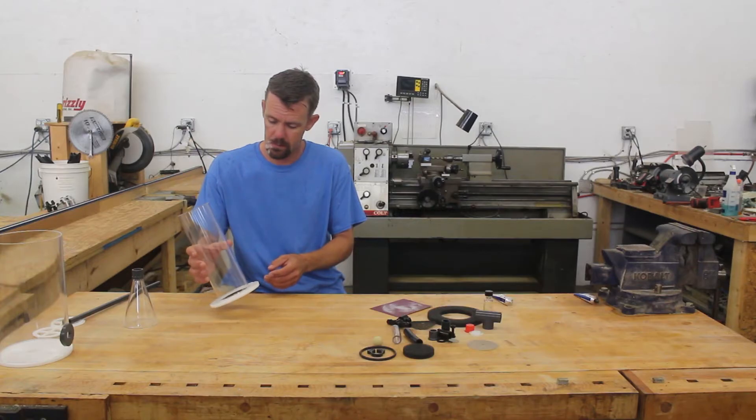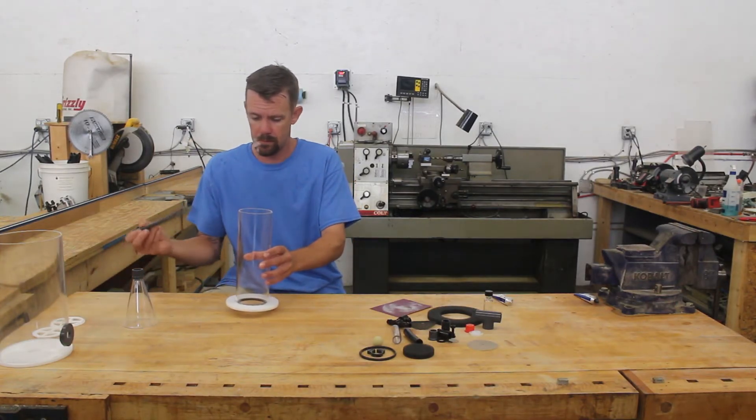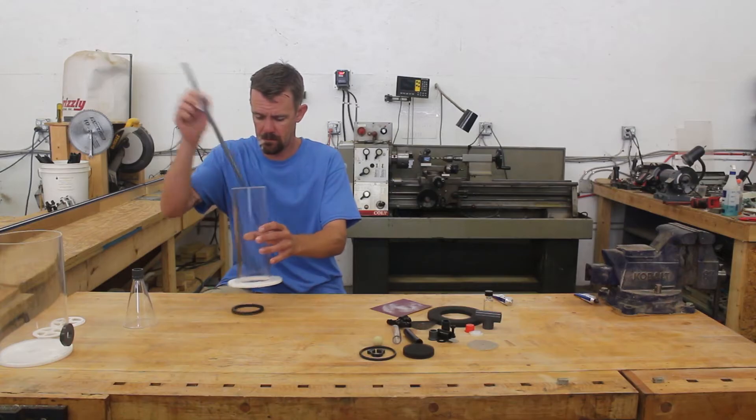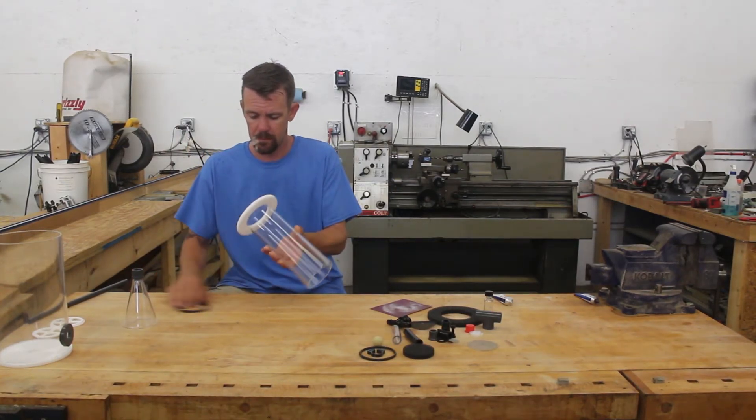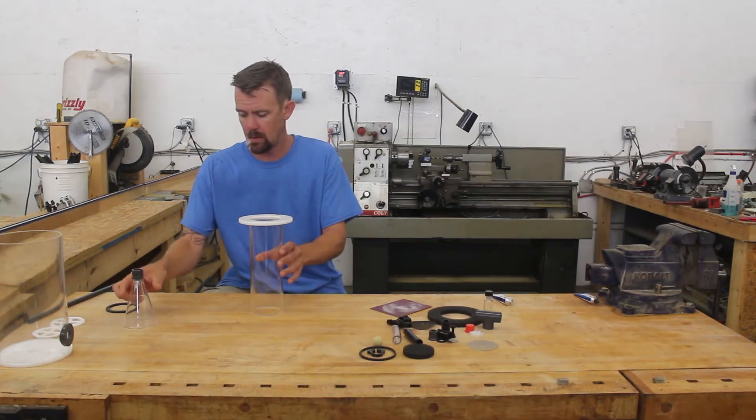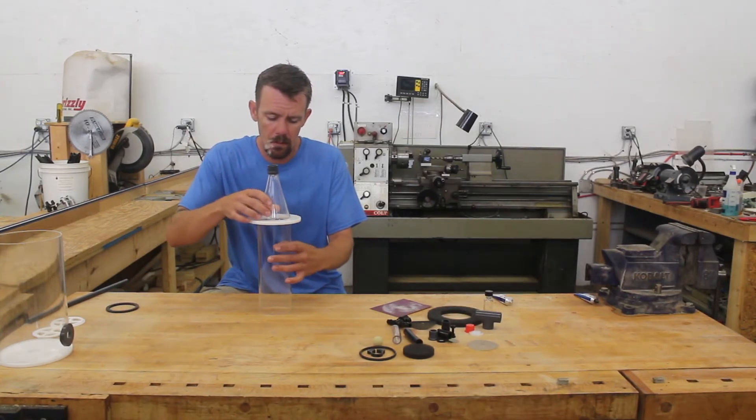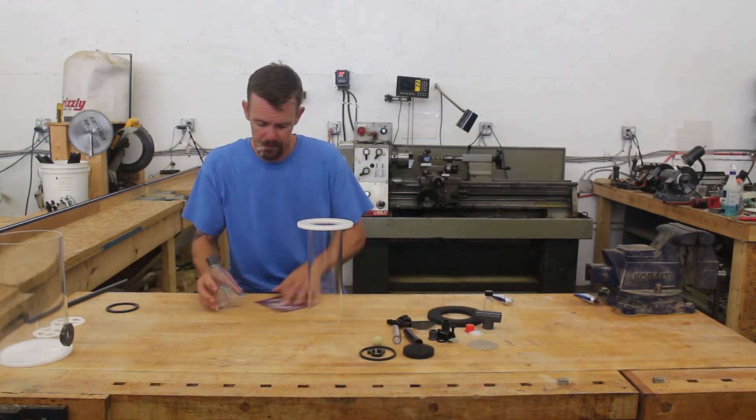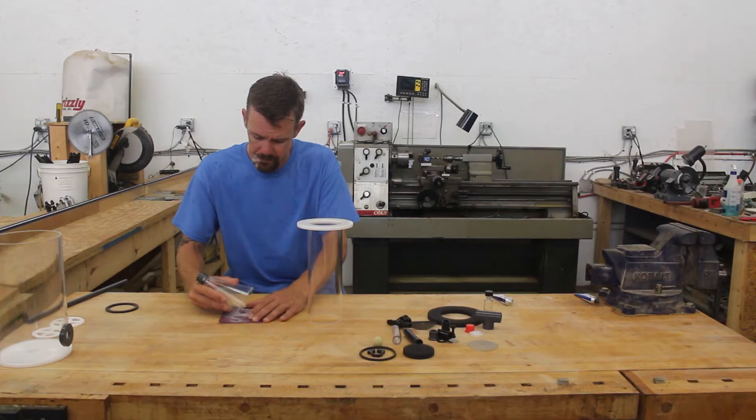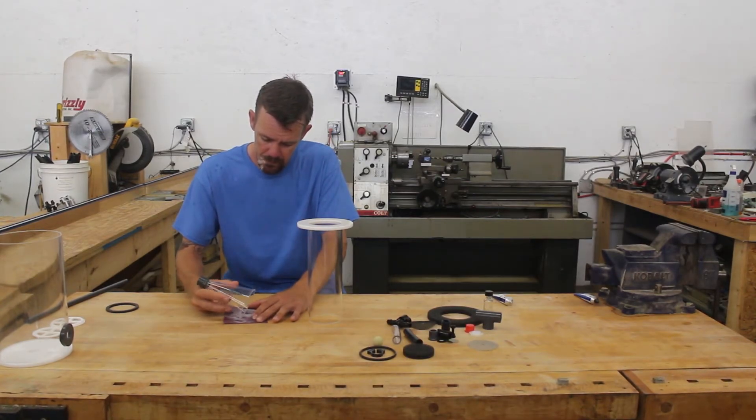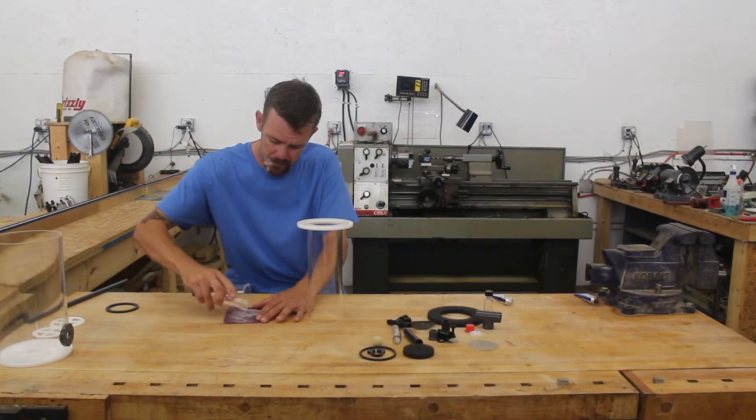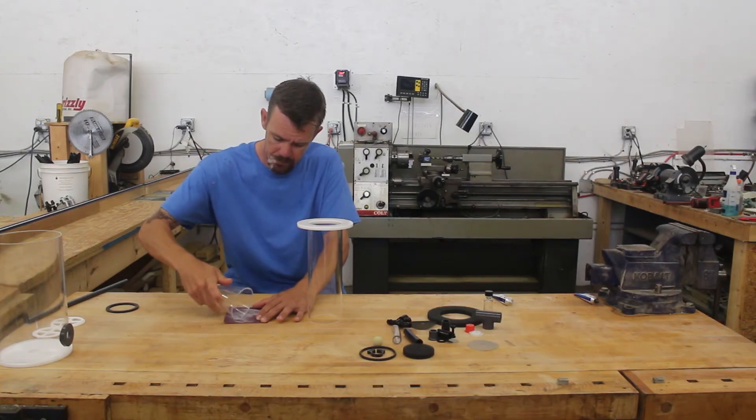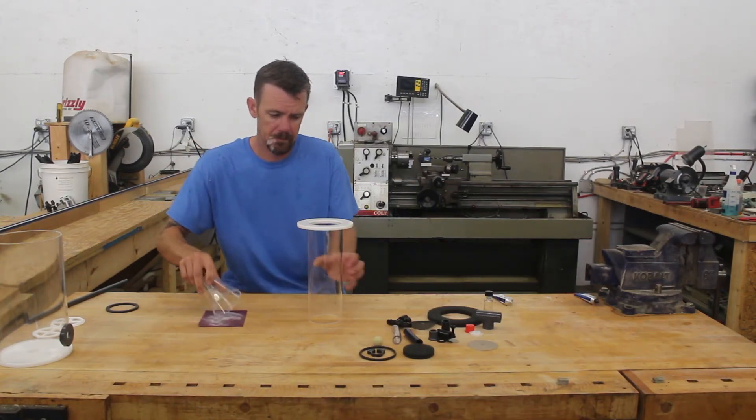Once this is dry, we can use something long to pop out the glue jig. Then we can test fit the cone inside the flange. You may need to lightly bevel the outer edge of the cone to get a nice fit. Sand slowly and test fit it often here.